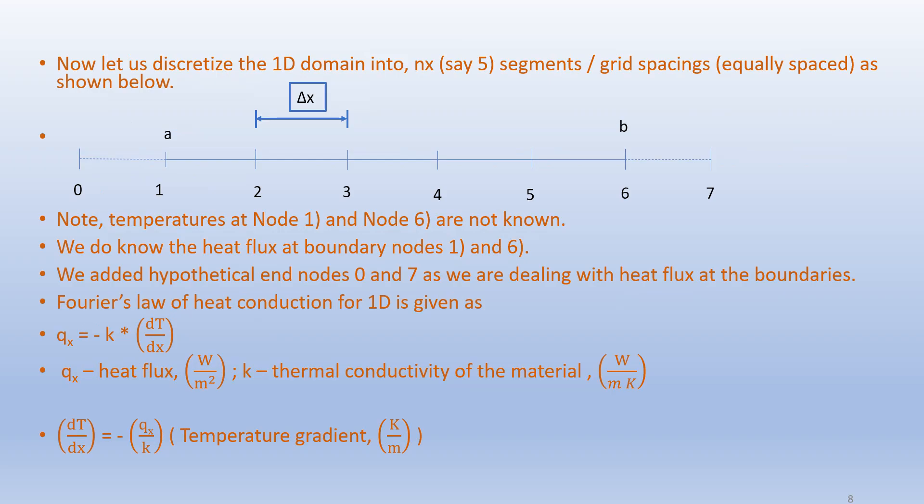Now let us discretize this 1D domain into N_x = 5 segments or grid spacings, equally spaced. We do not know the temperatures at the boundaries — the temperatures at node 1 and node 6 are not known. But we do know the heat flux at the boundary nodes 1 and 6. We add hypothetical ghost nodes 0 and 7, as we are dealing with heat flux boundary conditions.